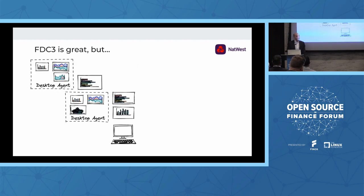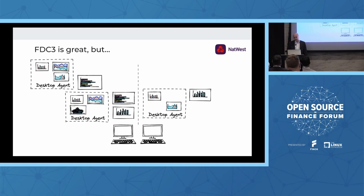We also have more than one desktop agent, more than one vendor platform, and we want to be able to bridge communication between these things. Additionally, we have users who use more than one machine at the same time. Traders might have six screens connected to four different machines, and they see that all as one desktop and expect to be able to interop across all of those different applications. So it's a complicated environment.